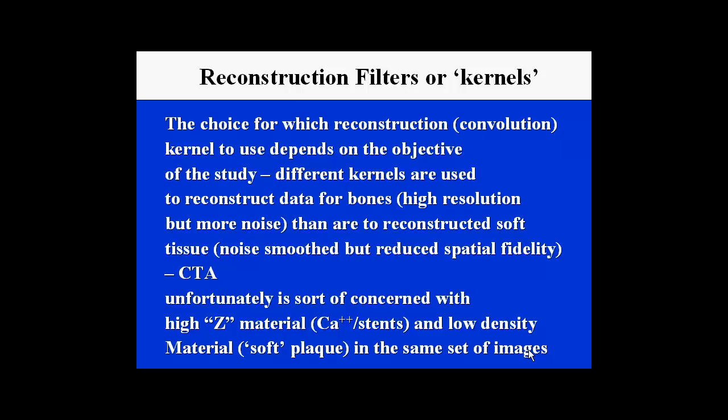The choices for which reconstruction or convolution kernel to use depends upon the object of the study. Different kernels are used to reconstruct data for different objects. If I wish to reconstruct images of a bone, I might want to use a high resolution or a hard kernel. The problem with this is that it has slightly more noise in the subsequent reconstructed image. Or I might consider looking at the adjacent soft tissue. With that situation, I can use a soft kernel, which smooths out the edges and produces less noise, but also has a difficulty with respect to absolute fidelity of the edges. Unfortunately, cardiac CTA is concerned with imaging high-density materials such as calcium and stents that are immediately adjacent to low-density materials such as non-calcified plaque or even lipid surrounding the coronary arteries.